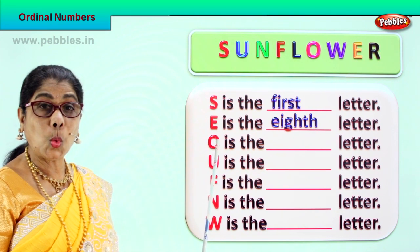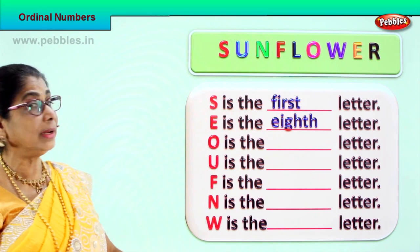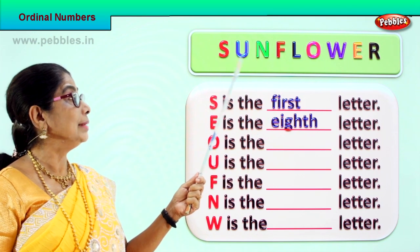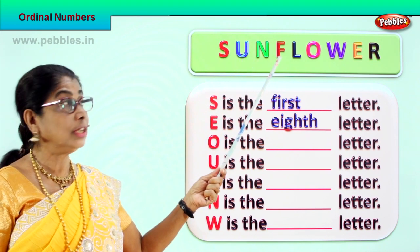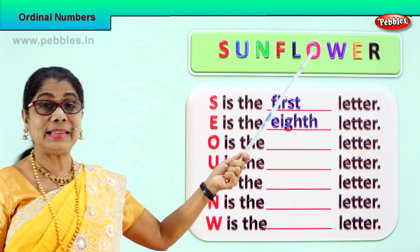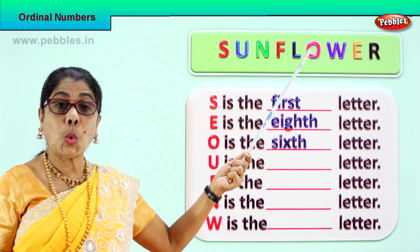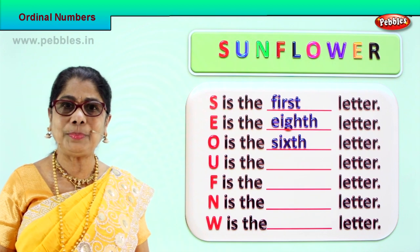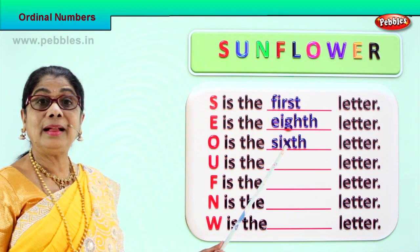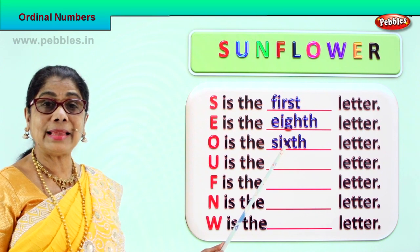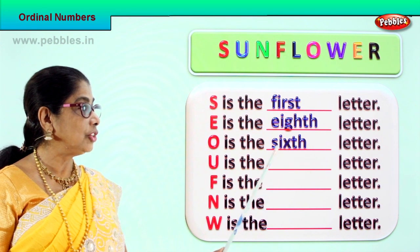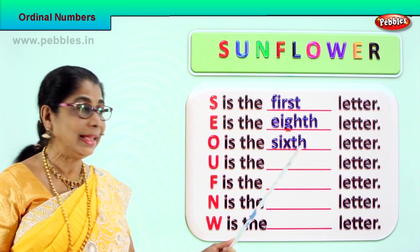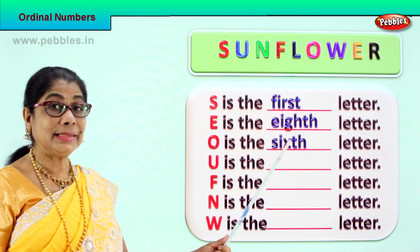What about letter O? Letter O is in what position according to the ordinal number? Where is O? First, second, third, fourth, fifth, sixth. The letter O in sunflower — O is the sixth letter, sixth position. Let's spell the ordinal number sixth: S-I-X-T-H. Sixth. O is the sixth letter.